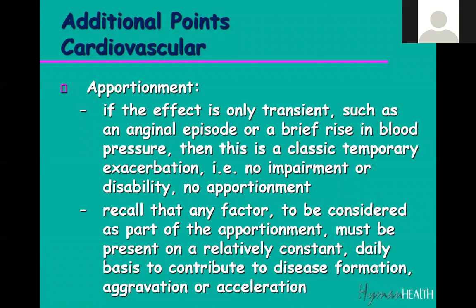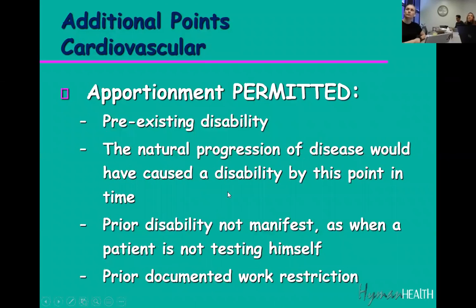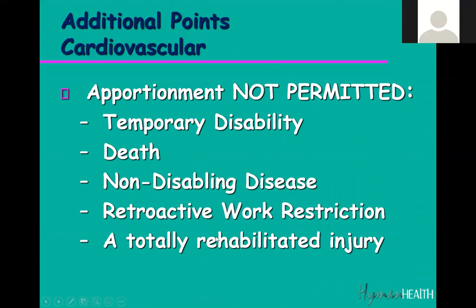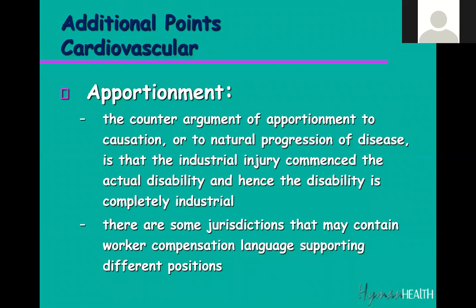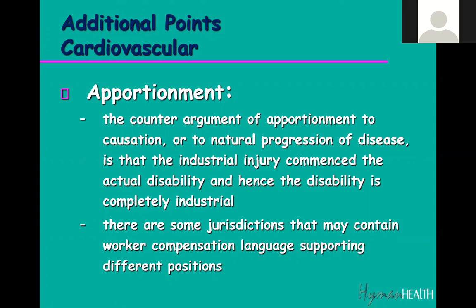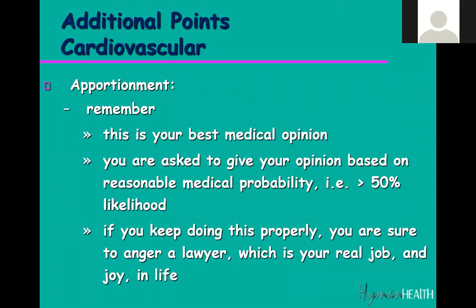When you think about all these risk factors, you have to think about apportionment — breaking up what causes a condition. You can have apportionment to pre-existing disability. Causation considerations include diabetes, cigarette use — you have to decide whether this is natural progression or whether there was a new onset tied to a specific event. You have to balance those things and consider the counter-argument: was there a sudden acute stress with no prior operating risk factors, or had those risk factors been accumulating for years? That's how you frame it. As I tell doctors: give your best medical opinion based on reasonable probability.